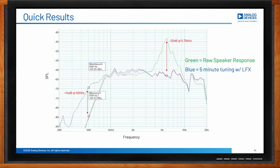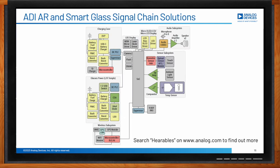Analog Devices has a wide variety of signal chain solutions that fit a very broad spectrum of the different electronics needed for AR, VR, and audio or smart glasses. For things like power management, battery management, audio codecs, and audio amplifiers, there are a lot of different solutions, and you can find more information on analog.com, where you have access to these signal chains and information about individual parts.